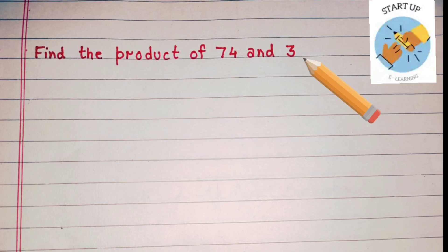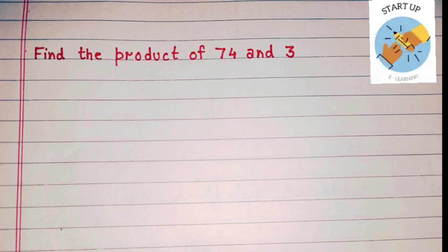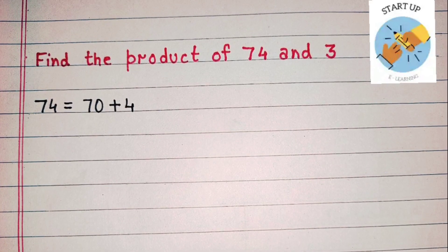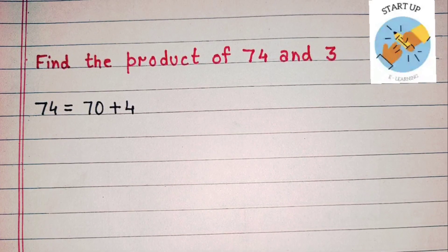Find the product of 74 and 3. Here, 74 is the multiplicand and 3 is the multiplier. Here also, we will break 74 into 70 plus 4.